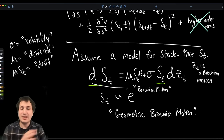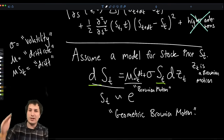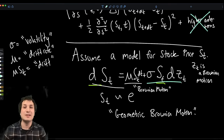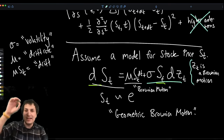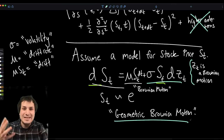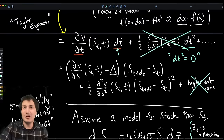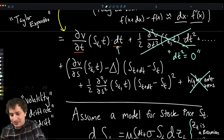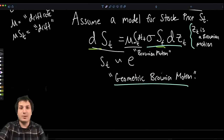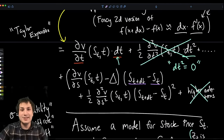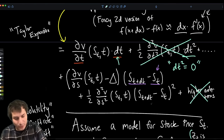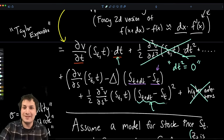Fortunately, dS_t appears directly in our equation, since S_{t+dt} − S_t is exactly dS_t. We can plug the geometric Brownian motion formula right in. Crucially, we also have a (dS_t)² term appearing, so it's worth investigating what dS_t squared is.